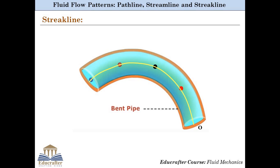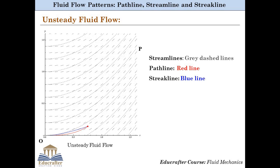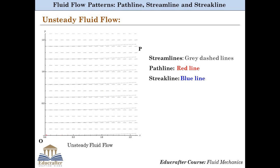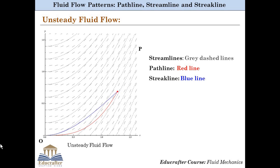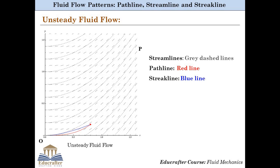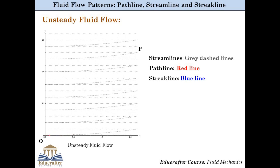So the question is: how do streamline, streakline and pathline differ from each other? Let us look at an example of unsteady flow to understand the difference. Here one can observe that the flow field is slowly changing its direction, making it a case of unsteady fluid flow. The grey dashed lines are streamlines, as they are tangential to the local velocity vectors. Since the flow is unsteady, the streamline pattern changes with respect to time.